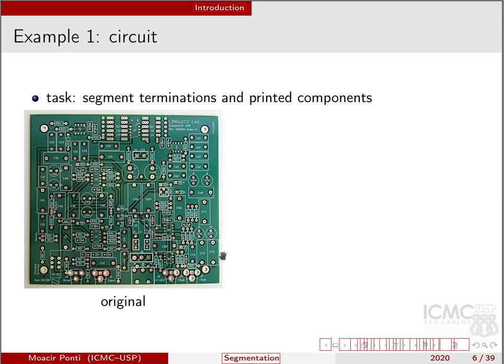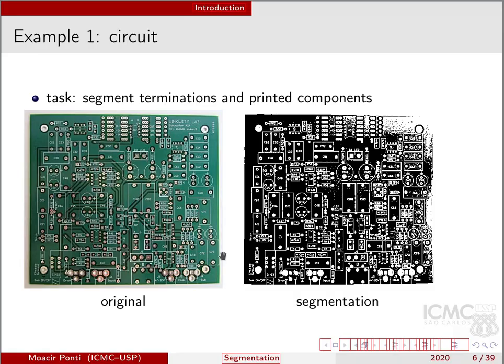Let us take this image as an example. Our task is to segment terminations and printed components of this board. If I try to use a naive implementation, it could lead to this segmentation — where segmented pixels are in white and objects of no interest are in black. We can see there are many white pixels that actually belong to the background or to the board itself, not the terminations. So something was wrong with the definition of this algorithm.